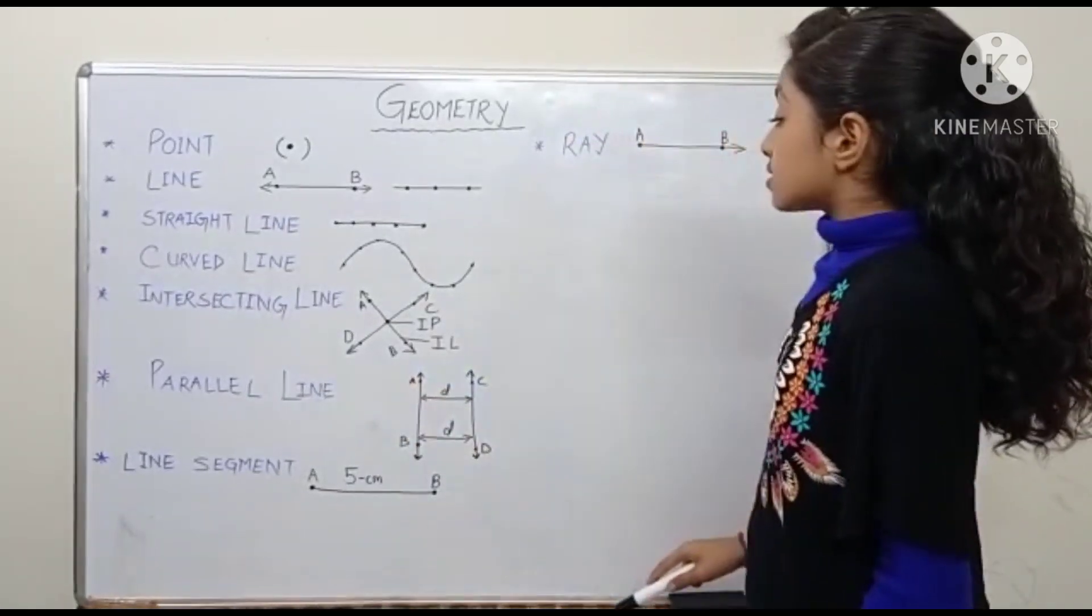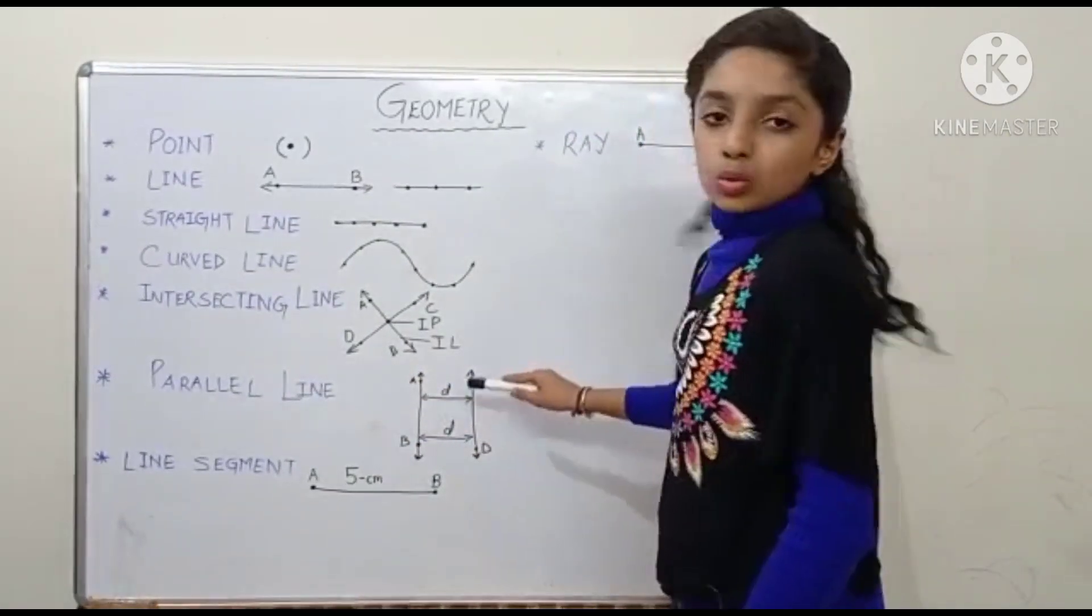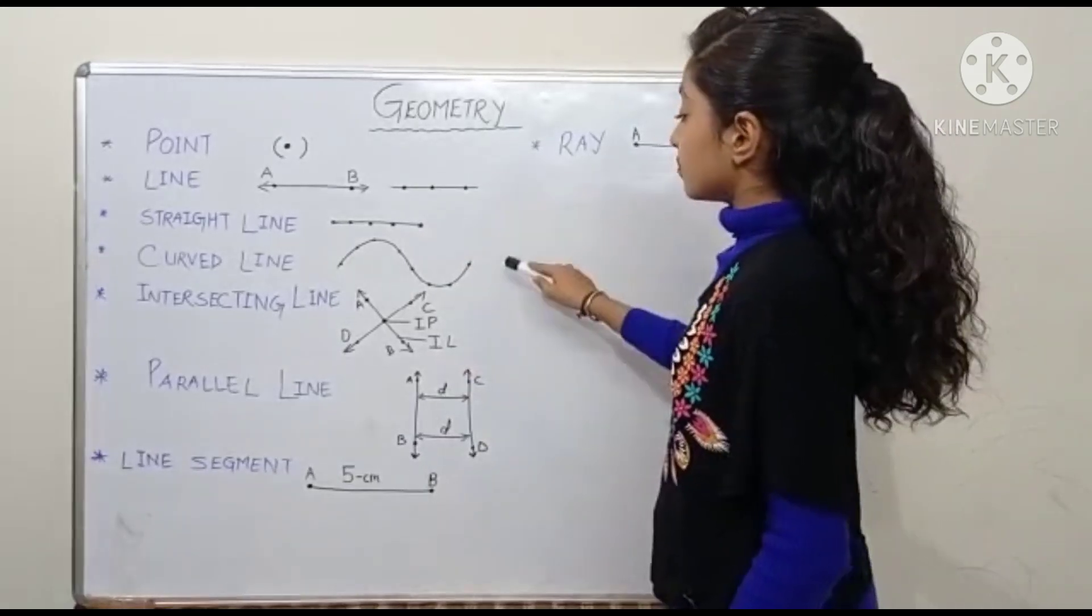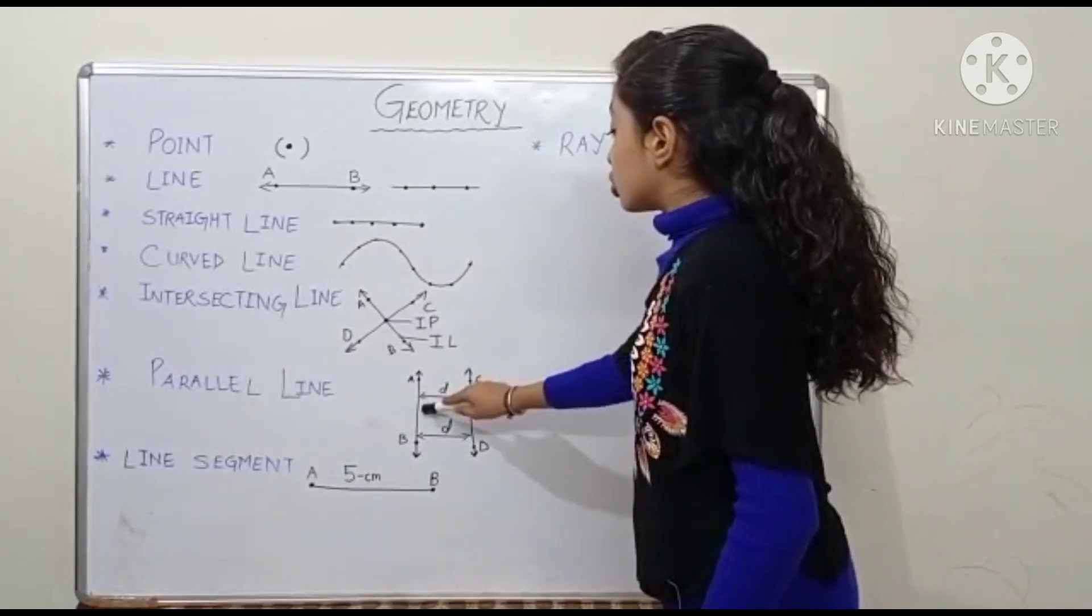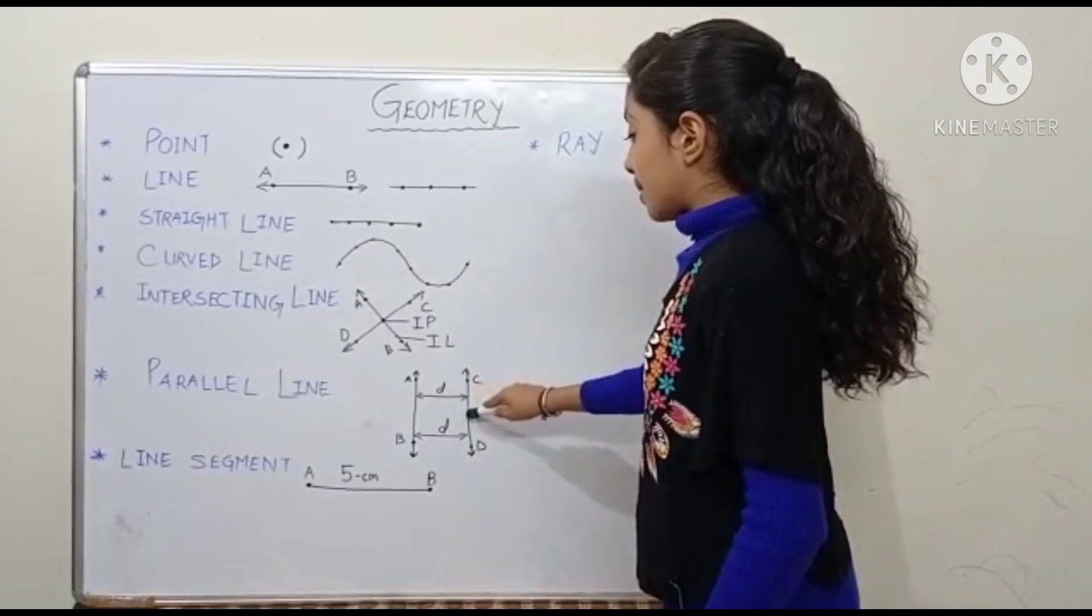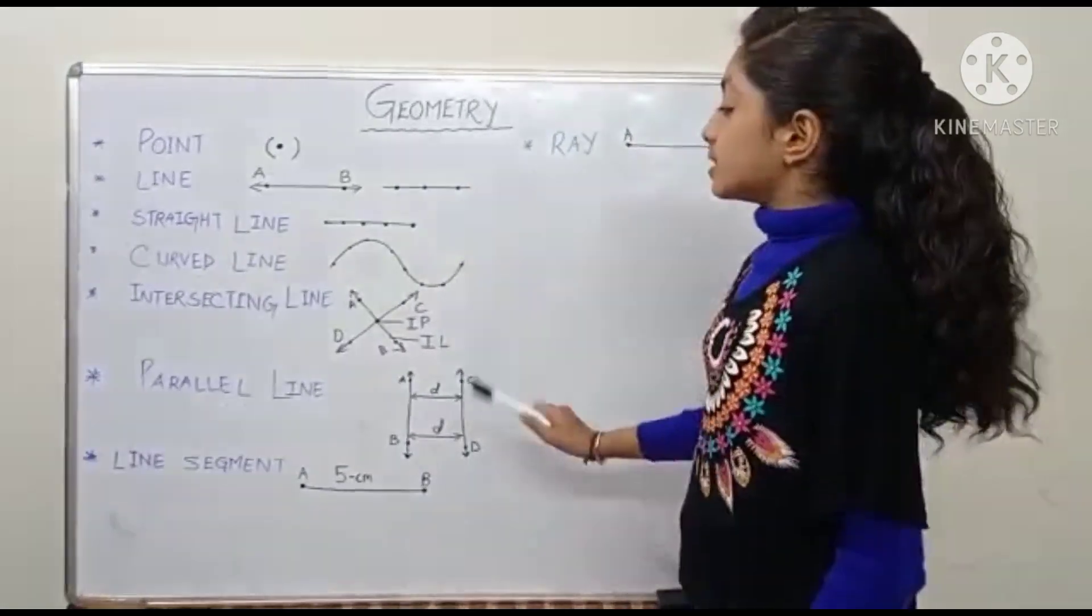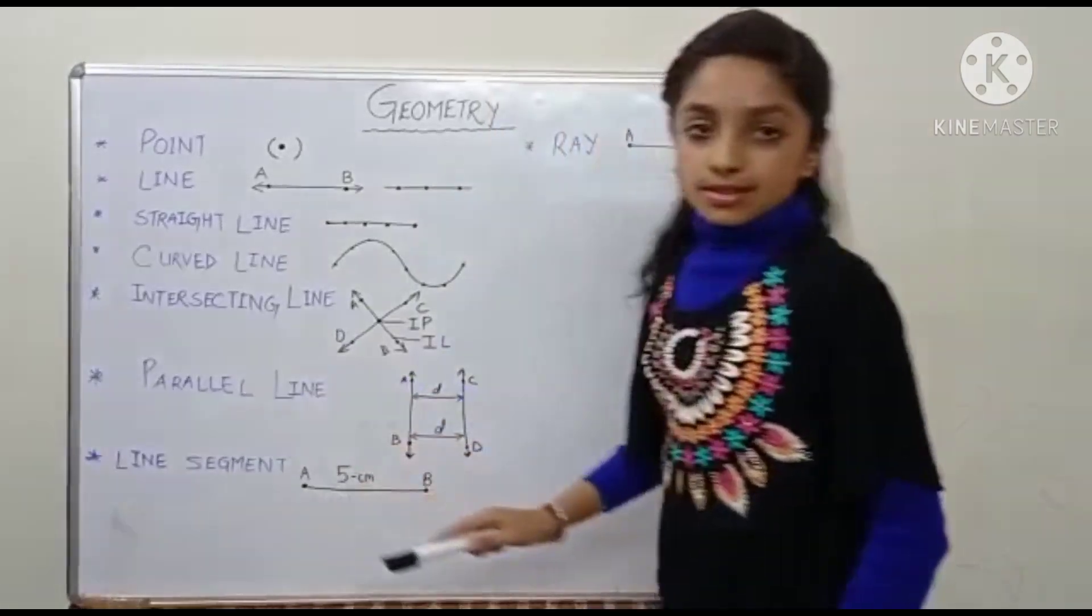Now friends, parallel lines. So two or more than two lines which runs in a same direction and have equal distance between them and that distance remains same forever is called parallel line.